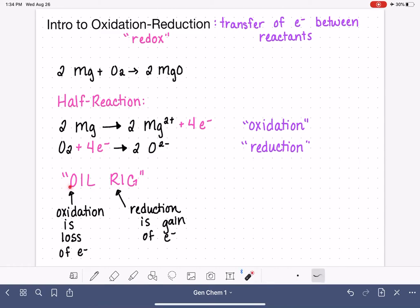So oxidation is loss. Reduction is gain. And when we talk about the gain of electrons versus the loss of electrons, this is always, for both of these, from the perspective of the reactants.